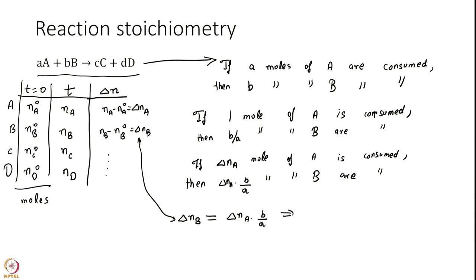I simplify this as delta NA over a equals delta NB over b and as a convention we use a negative sign for consumption.